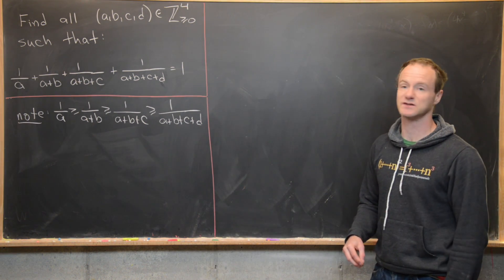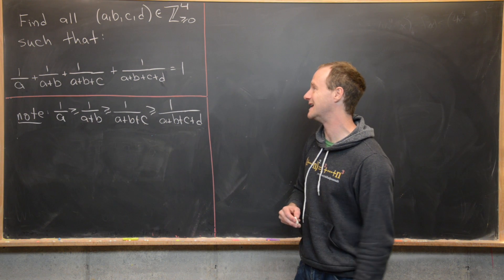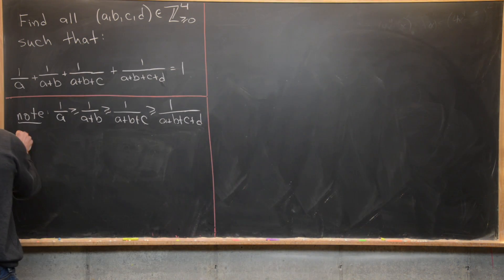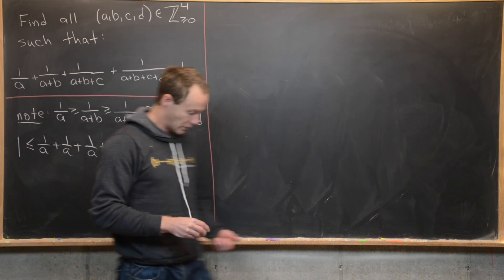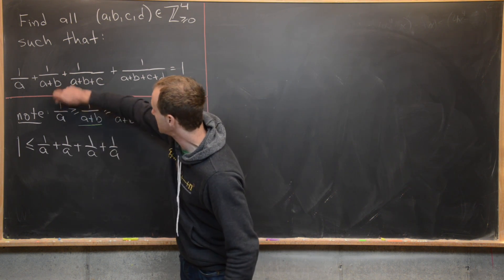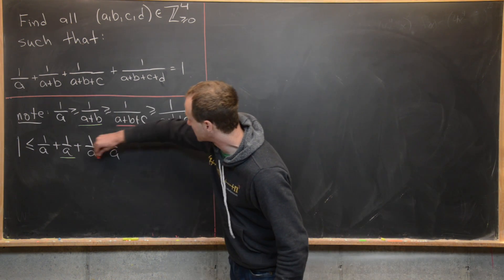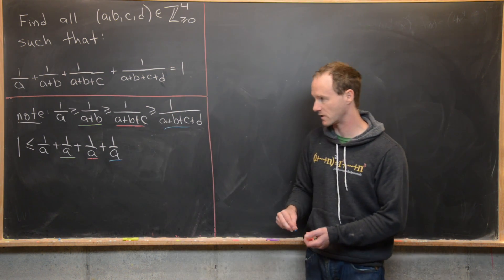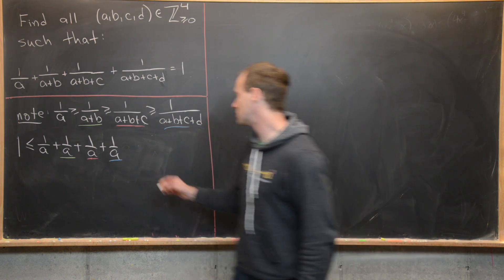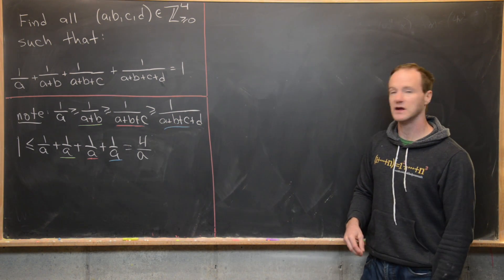That ordering holds because the denominators are getting larger, making the fractions smaller. Now we take the goal equation and replace the last three terms with 1/A to create an inequality. So we get: 1 ≤ 1/A + 1/A + 1/A + 1/A = 4/A, giving us the inequality 4/A ≥ 1.